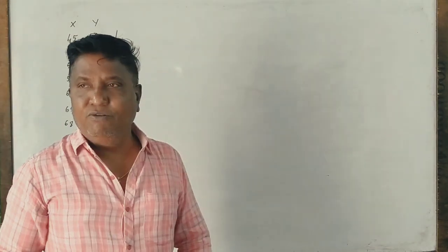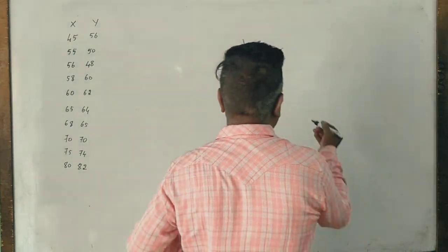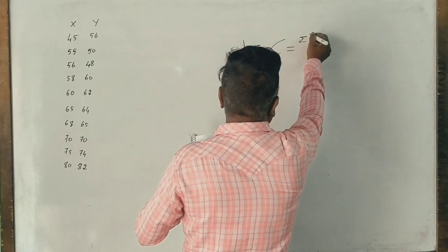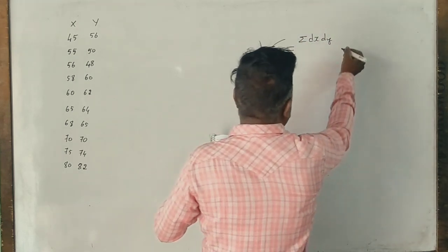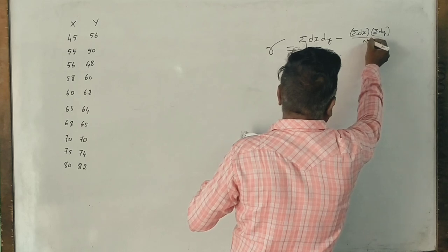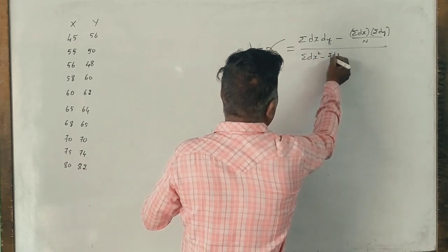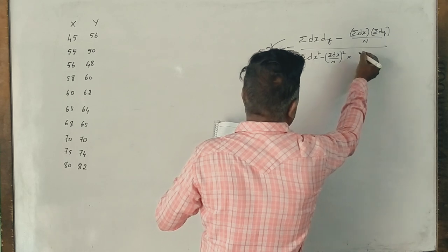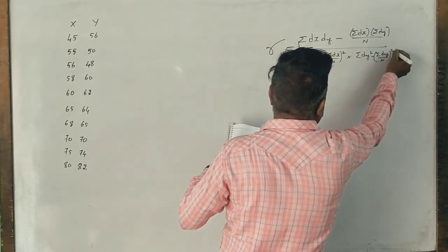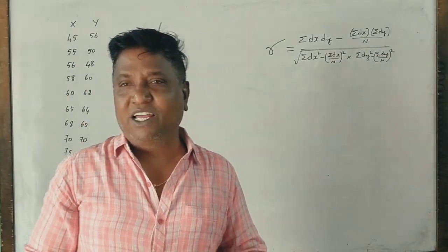Now, what is the formula to calculate the correlation? We represent correlation like this: summation dx into dy minus summation dx into summation dy divided by n, whole root summation dx square minus summation dx divided by n whole square, into summation dy square minus summation dy divided by n whole square, whole root.